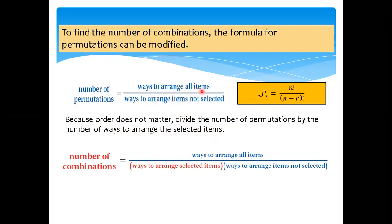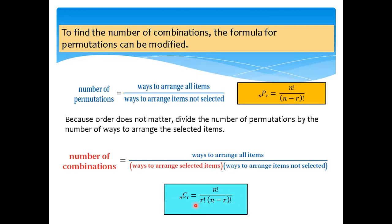For combination, the numerator stays the same — ways to arrange all items — but the denominator is ways to arrange selected items times ways to arrange items not selected. This gives us the formula for combination: NCR = N! / (R! × (N − R)!). Take note of this formula and make sure to familiarize yourself with it.